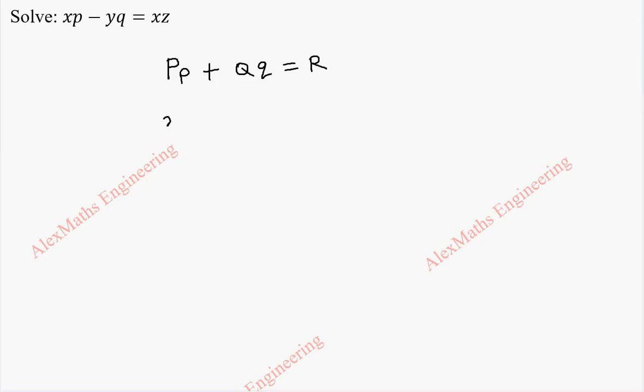So, the first term is x into small p and second term is minus y into small q and the last term is x into z. From this we can understand what is capital P, what is capital Q and what is capital R. So, that we are going to write it separately. Capital P is x, capital Q is minus y and capital R is xz.